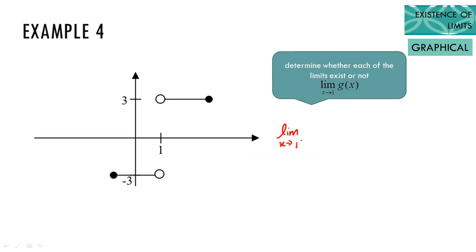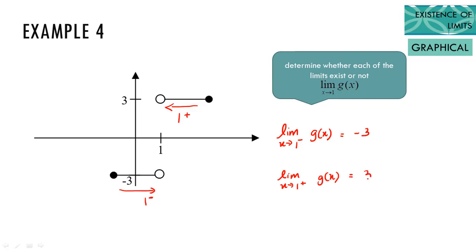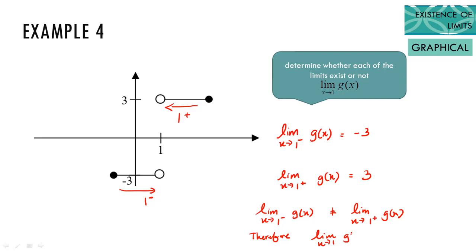Example four: when x approaches one from the left and right respectively, there is a horizontal line at y equal to negative three and y equal to three. We write in notation: the limit of g(x) as x approaches one from the left is equal to negative three, and the limit of g(x) as x approaches one from the right is equal to three. Since the two-sided limits are not equal, therefore the limit does not exist.